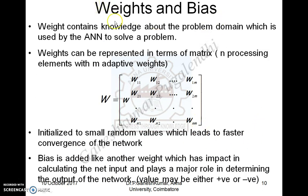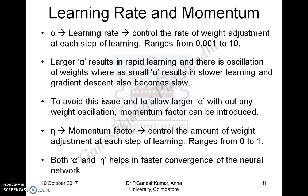Weights and biases play a major role in developing the ANN model. The objective is to find suitable values for weights and biases to establish a relationship between input and output. Since we don't know these values initially, we follow the gradient descent approach to find suitable weight and bias values towards minimum error between target and output. Learning rate (alpha) and momentum (eta) are two parameters that control the step of the learning process, with learning rate ranging from 0.001 to 10 and momentum from 0 to 1, helping achieve faster convergence.